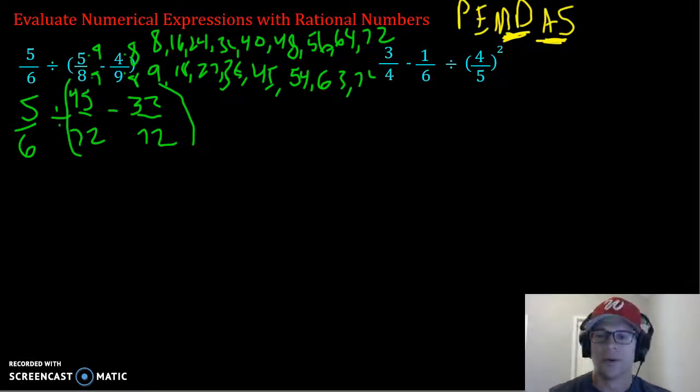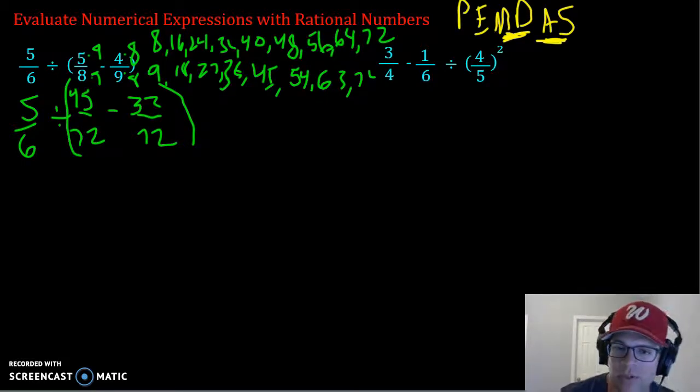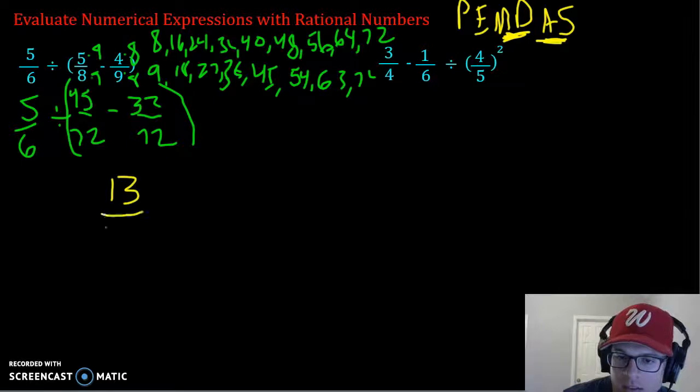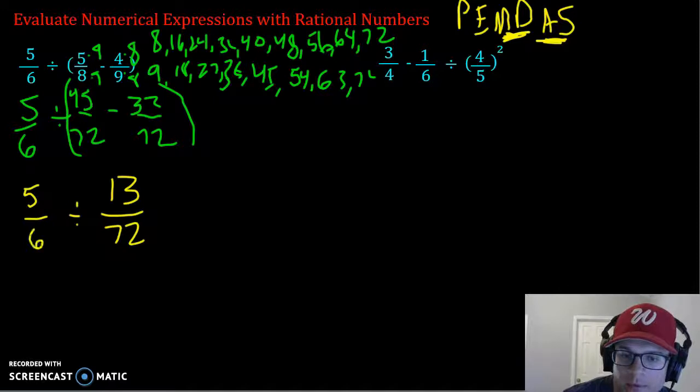All right, so now that we have common denominators, we can subtract straight across. 45 minus 32 is 13 over 72, and that's being divided by 5 over 6.